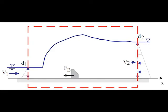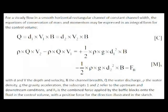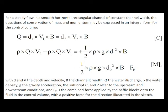First, we sketch the hydraulic jump stilling basin, the baffle blocks, and the forces acting on the control volume in the horizontal x-direction. For steady flow in a smooth horizontal rectangular channel of constant width, the equations of conservation of mass and momentum provide an expression in which Fb is the combined force of the baffle blocks onto the fluid in the control volume.